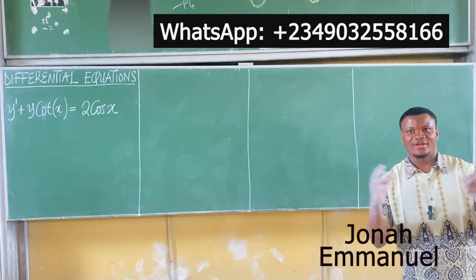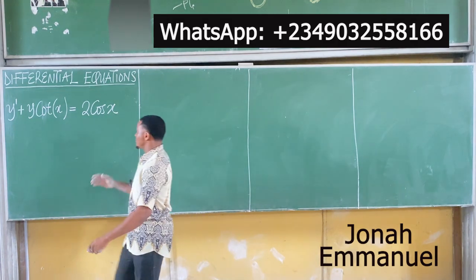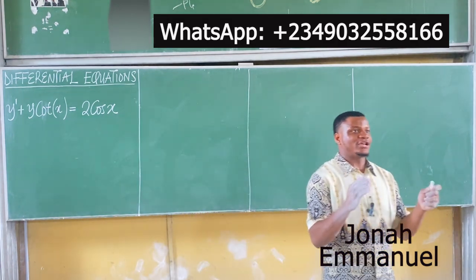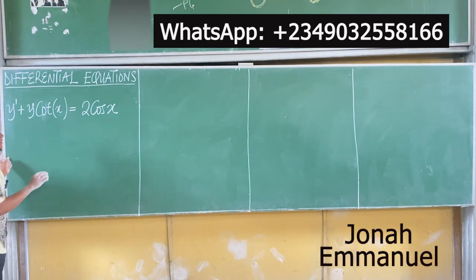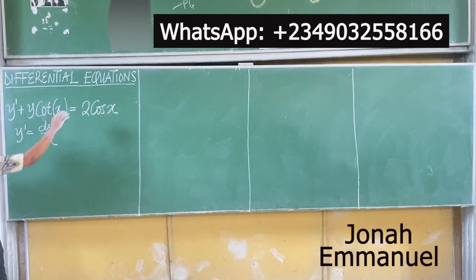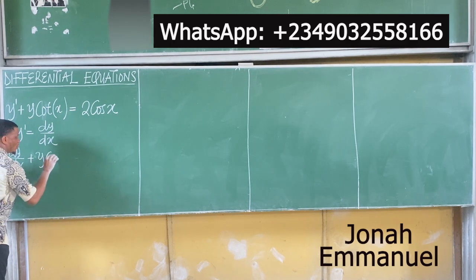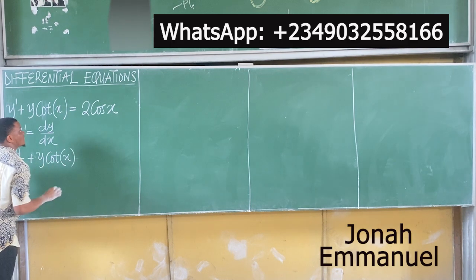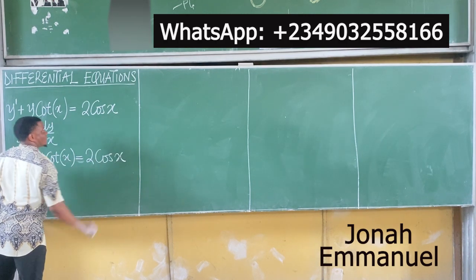Let's look at another interesting question. y prime plus y·cos(x) is equal to 2cos(x). Observe the form of this. y prime simply means dy/dx. So this is the same as saying dy/dx plus y·cos(x) is equal to 2cos(x).